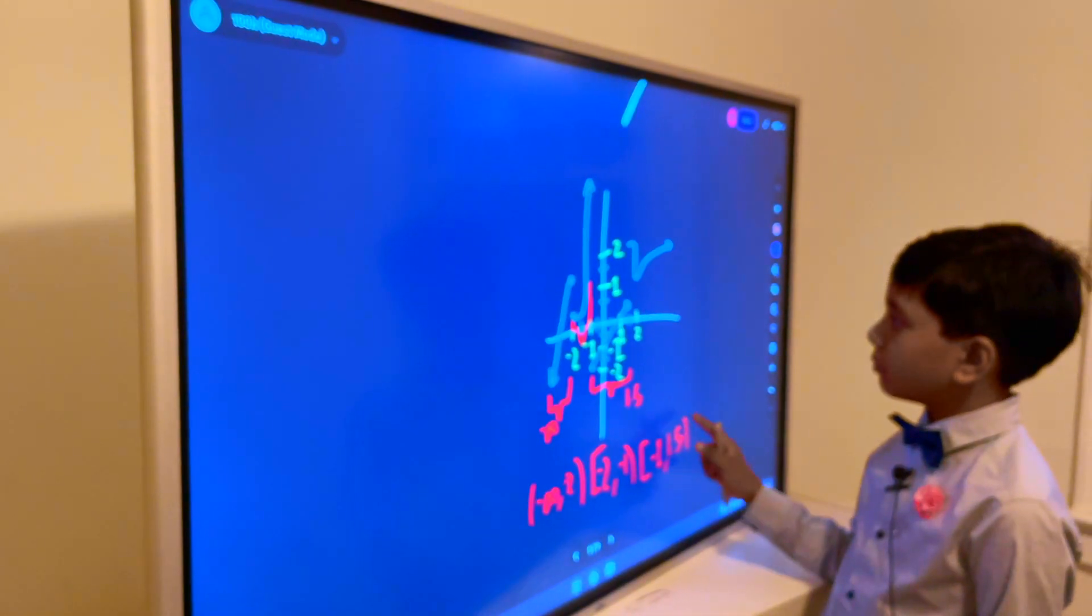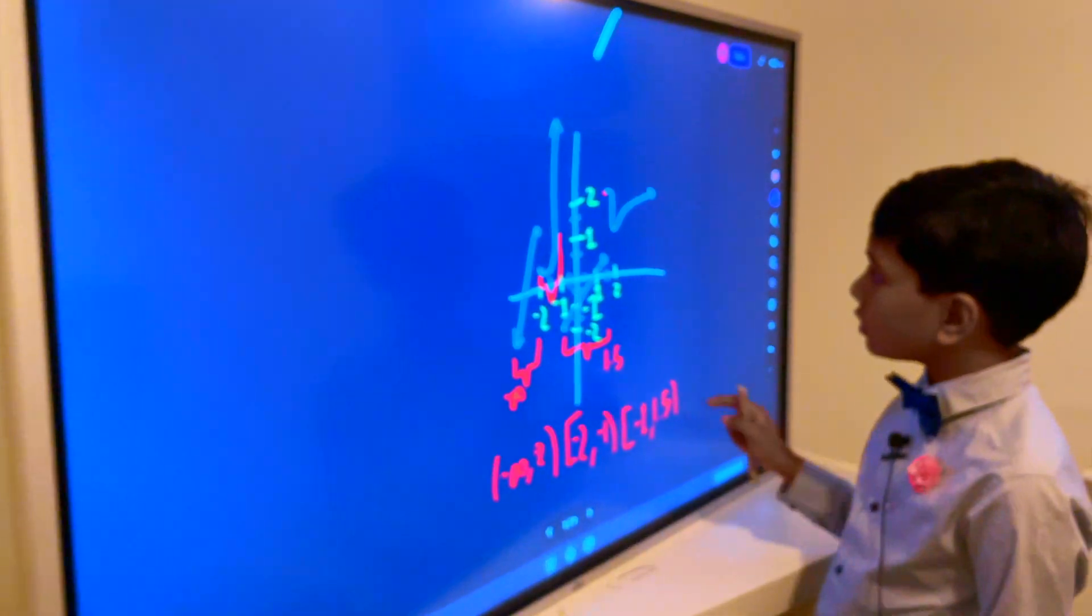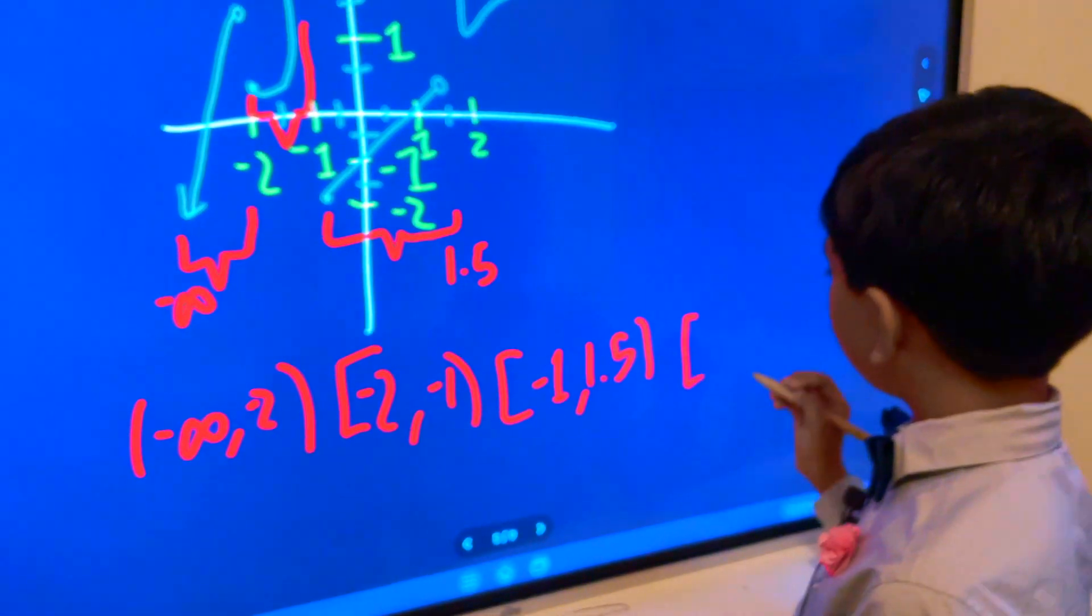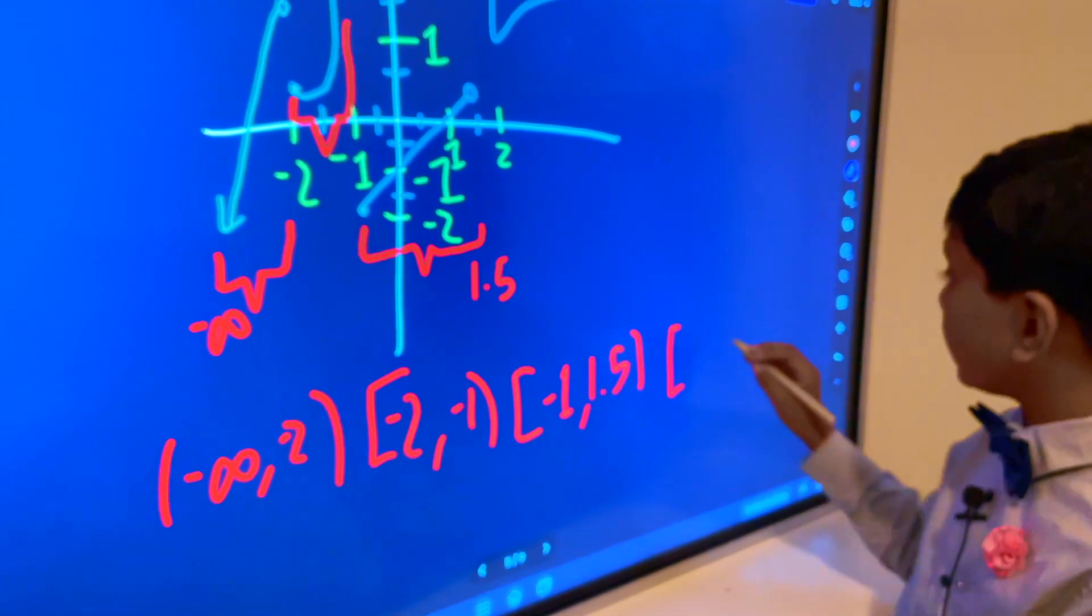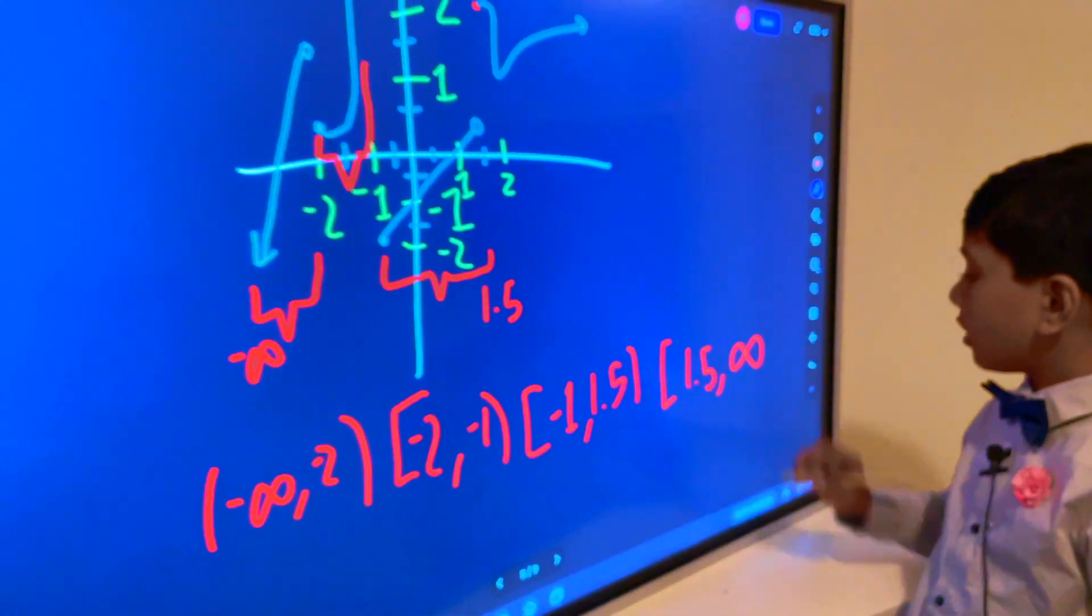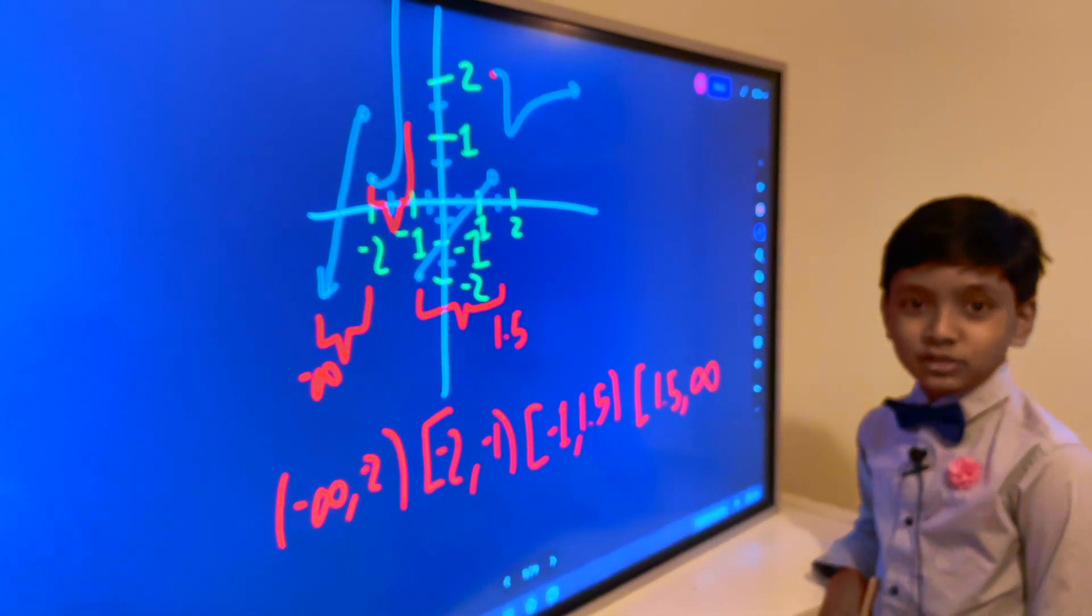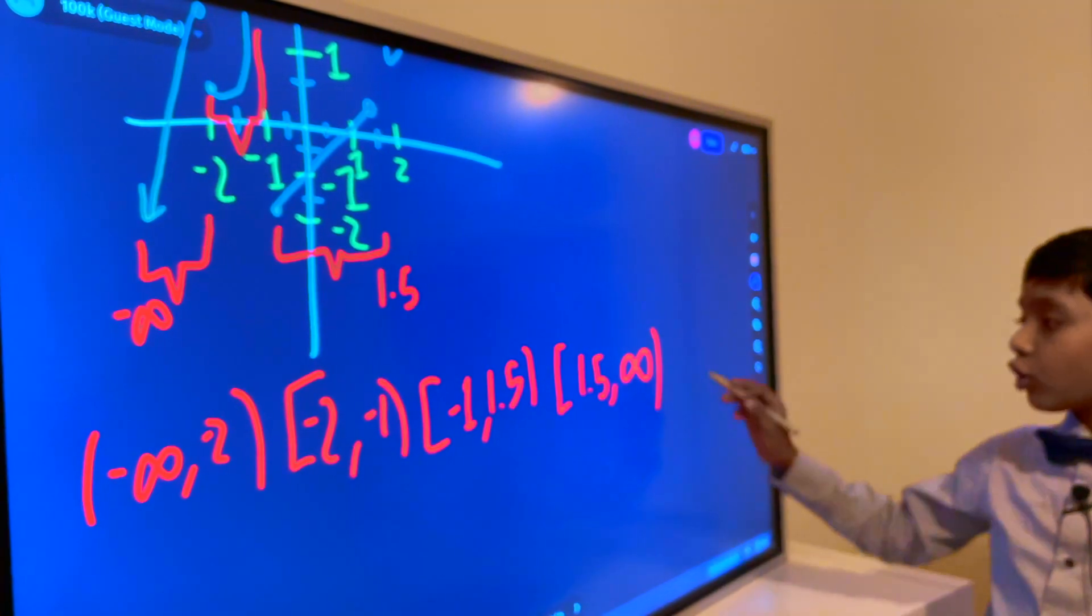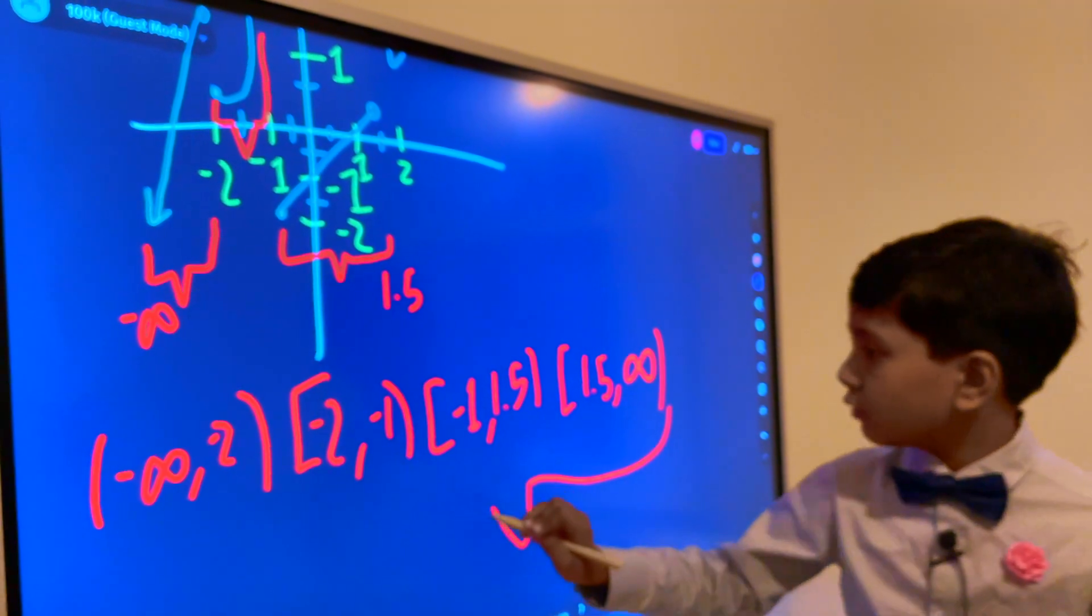And then from 1.5 onward, then everything is stable, everything is solid. Can't really say that much about the United States. Those are the four continuous intervals in our function.